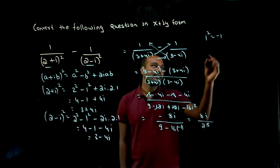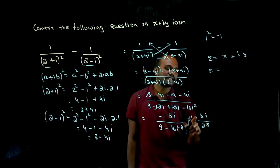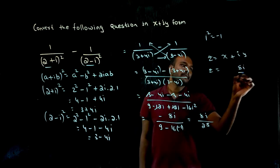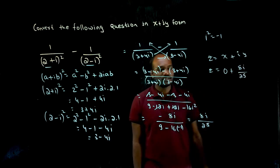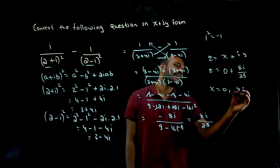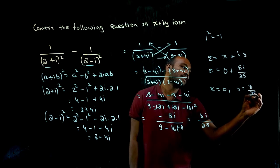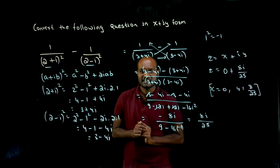So see here we have to convert this into x plus iy. Now what we got, we got the z value as minus 8i by 25. So can I write 0 plus of this? So what is the x value? x value is 0. What is y value? 8 by 25. Simple. Is that correct? Yes or no? Yes.